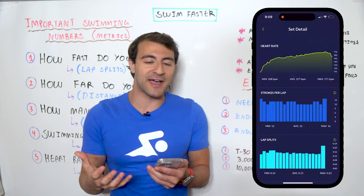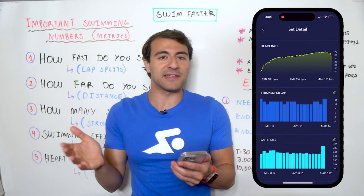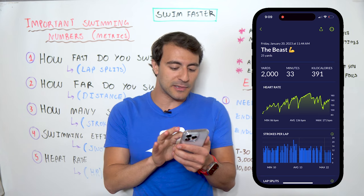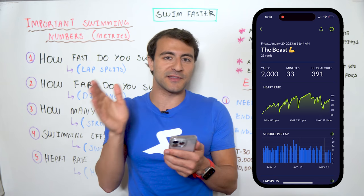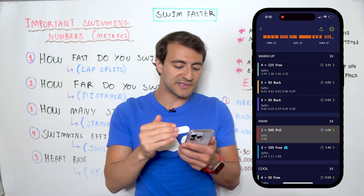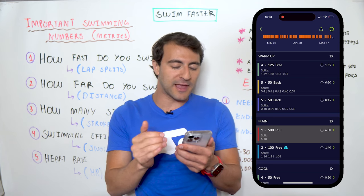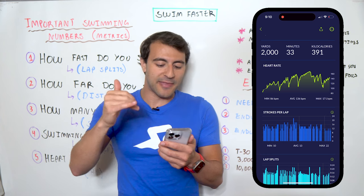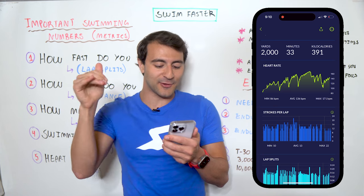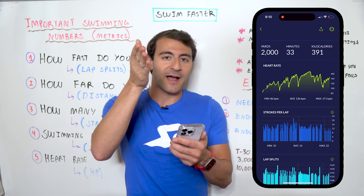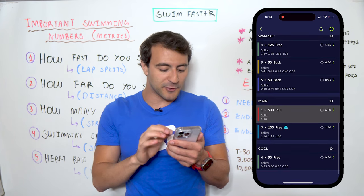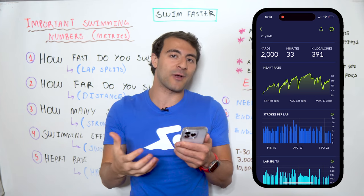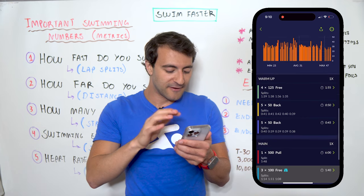The fifth metric is heart rate. Over the course of the 500, my heart rate gradually increased — which makes sense swimming continuously without a break. If you look at the overall workout graph, you can see clear divisions in my heart rate when I move from set to set. The warm-up had three different sets, then a big break before the 500, creating three distinct mountains followed by one large uninterrupted mountain peaking at 171 beats per minute.